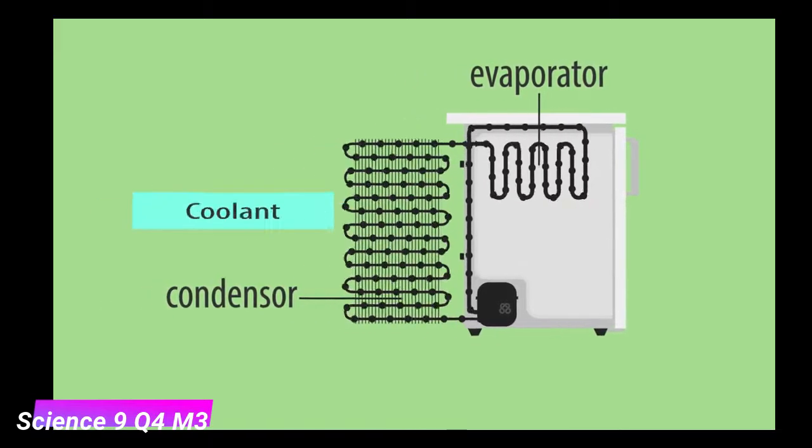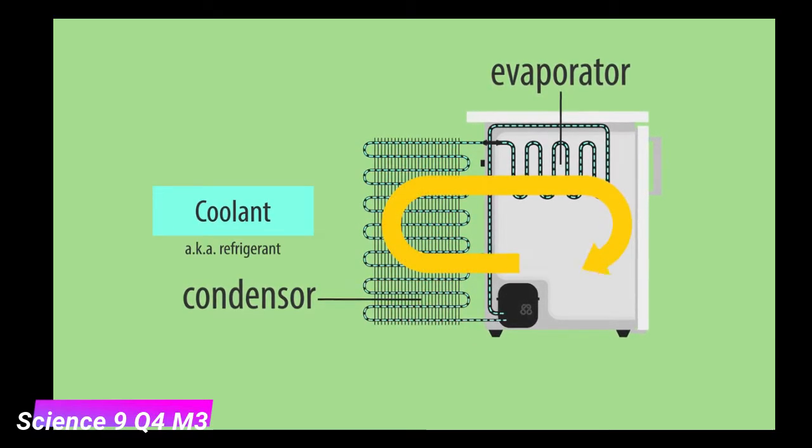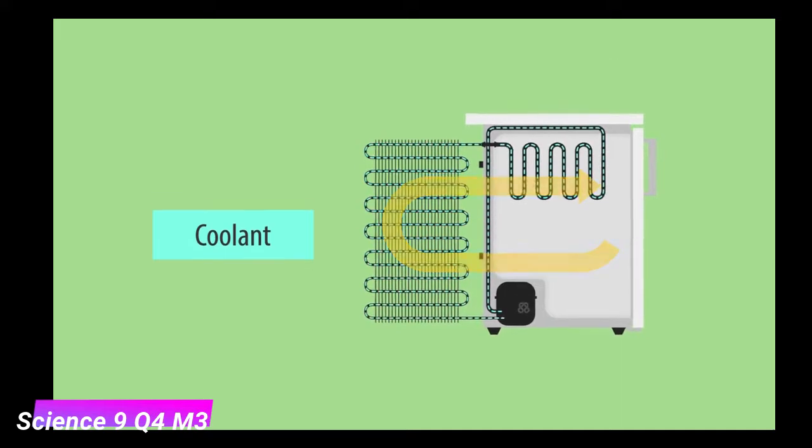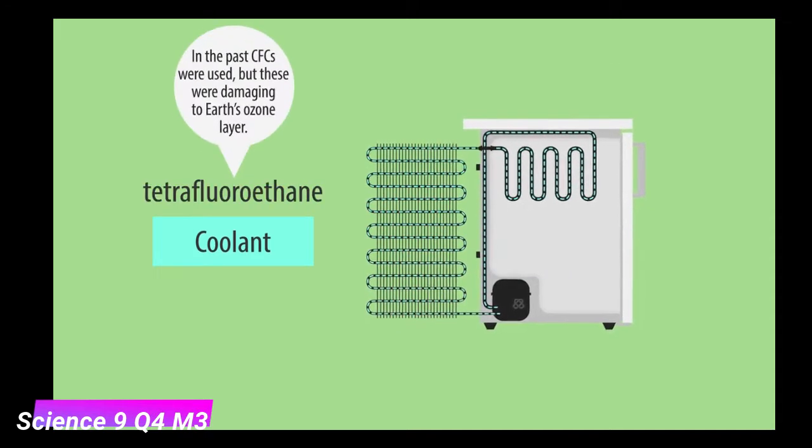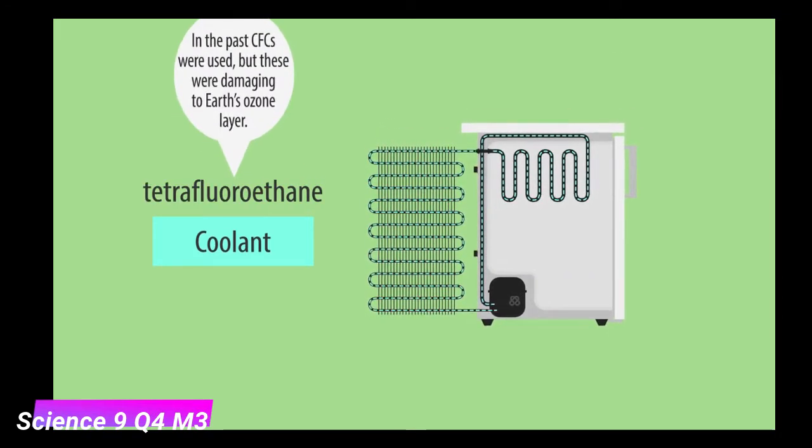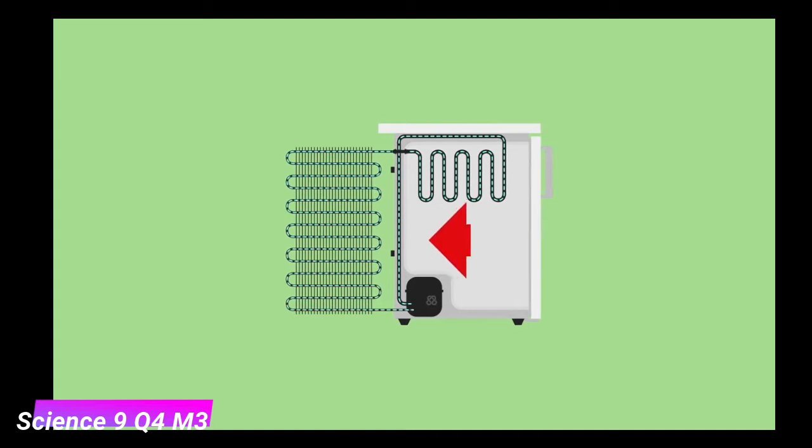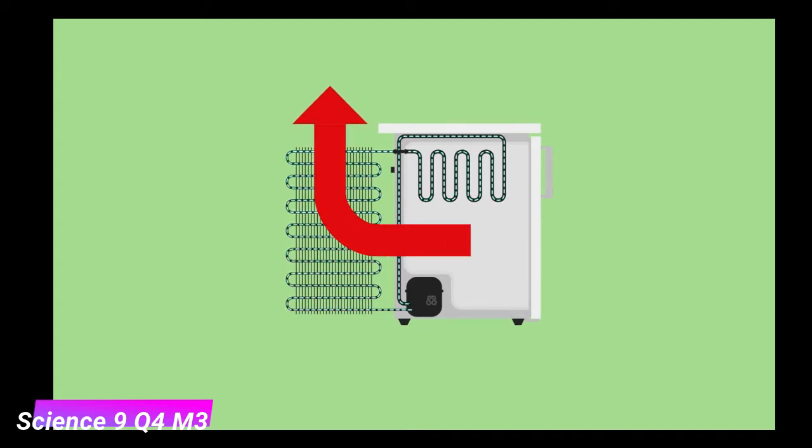A gas called a coolant is circulated from the evaporator to the condenser and back again. A modern fridge uses tetrafluoroethane as coolant. The coolant moves heat from the inside of the insulated cabinet to the outside.